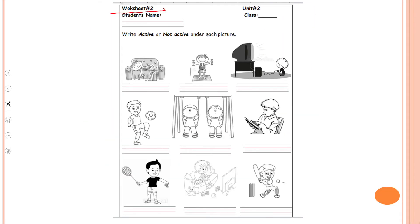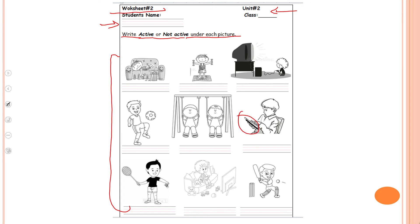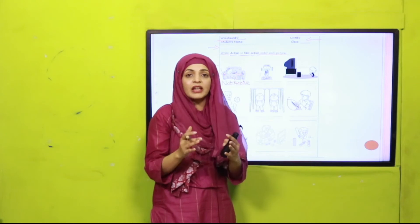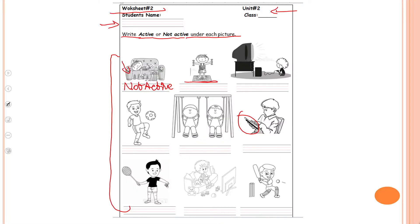A printed worksheet will be given to you by your teacher. Write your name and your class. This is a very easy worksheet — write 'active' or 'not active' under each picture. There are different kids: some are playing, some are sitting, some are playing video games on TV, some are using a mobile phone. For example, this boy is not active. Let's do it quickly: not active, active, active, active, active, not active, active, not active, active. You can pause the video and complete the worksheet yourself.